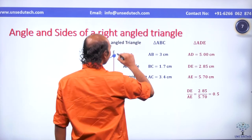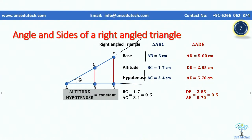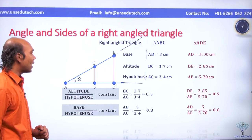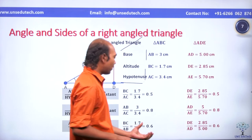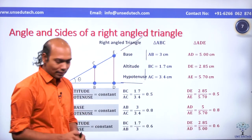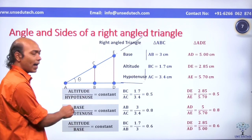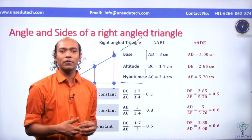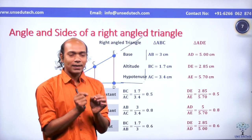We learn that for any right angle triangle, if the angle is constant, the ratios of altitude by hypotenuse, base by hypotenuse, and altitude by base are always constant. This can be a property of a right angle triangle. For that reason, we define 3 basic concepts of trigonometry based on these ratios.